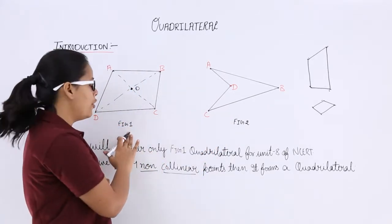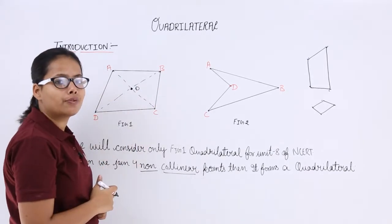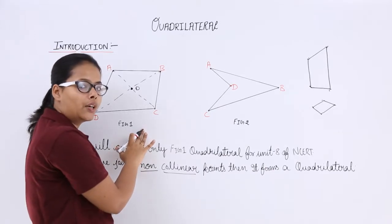But for unit 8 we will be only considering figure 1 kind of quadrilateral A, B, C, D. You can see here I have joined these four points and this is forming a quadrilateral like this.